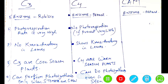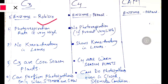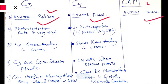The enzyme involved in the C3 pathway is RuBisCO, which helps attach carbon dioxide to RuBP. In the C4 cycle, the enzyme used to attach carbon dioxide to PEP — phosphoenolpyruvate — is PEP-case. In CAM, the same enzyme PEP-case is used. So PEP-case is common to both C4 and CAM, while RuBisCO distinguishes the C3 pathway.